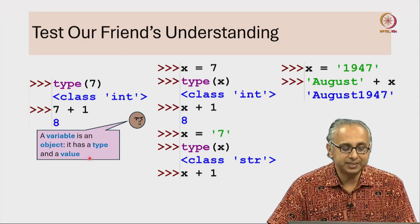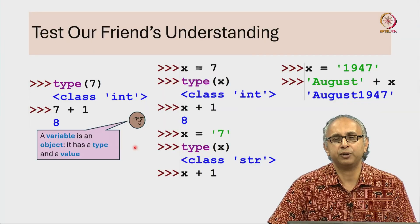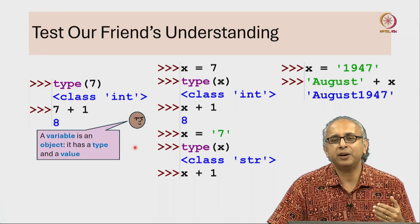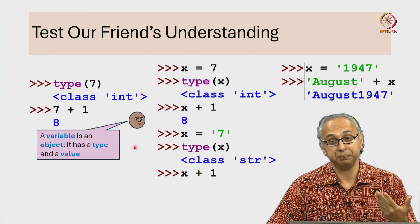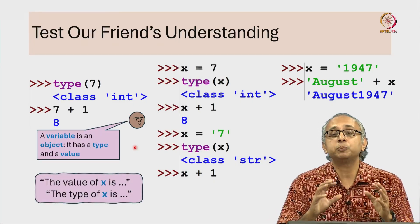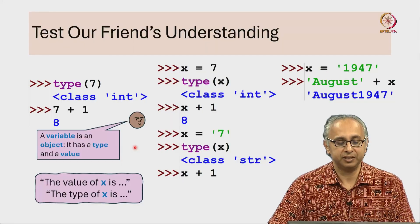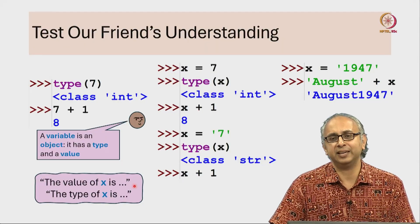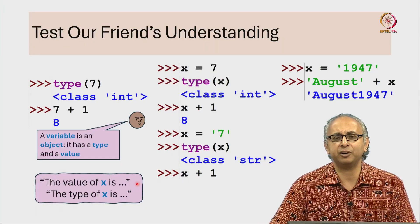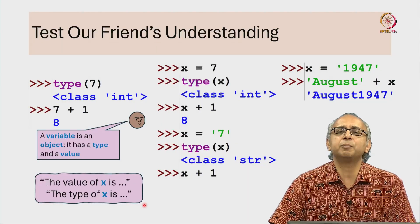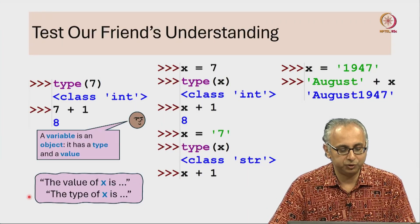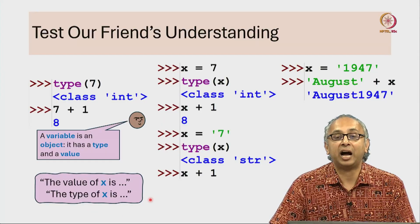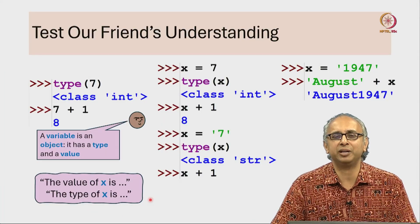So this misconception that our friend has is very understandable because just like our friend, you will often hear people including me speak loosely like this. You know, the value of x is such and such, the value of this variable x is such and such, or this variable is of a certain type. This is loose language. I have used this slightly wavy outline to indicate that this is not very precise.